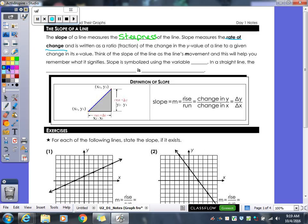It is written as a ratio, which if you've forgotten, a ratio just means it's a fraction of the change in y to a given line over the change in x. Think of the slope of the line as the line's movement and this will help you remember what it signifies. Slope is symbolized using the variable m. Now in a straight line, which is what we're doing for this unit, the rate of change is constant. So what that means is it's always the same amount for the rate of change which is why it makes a straight line.